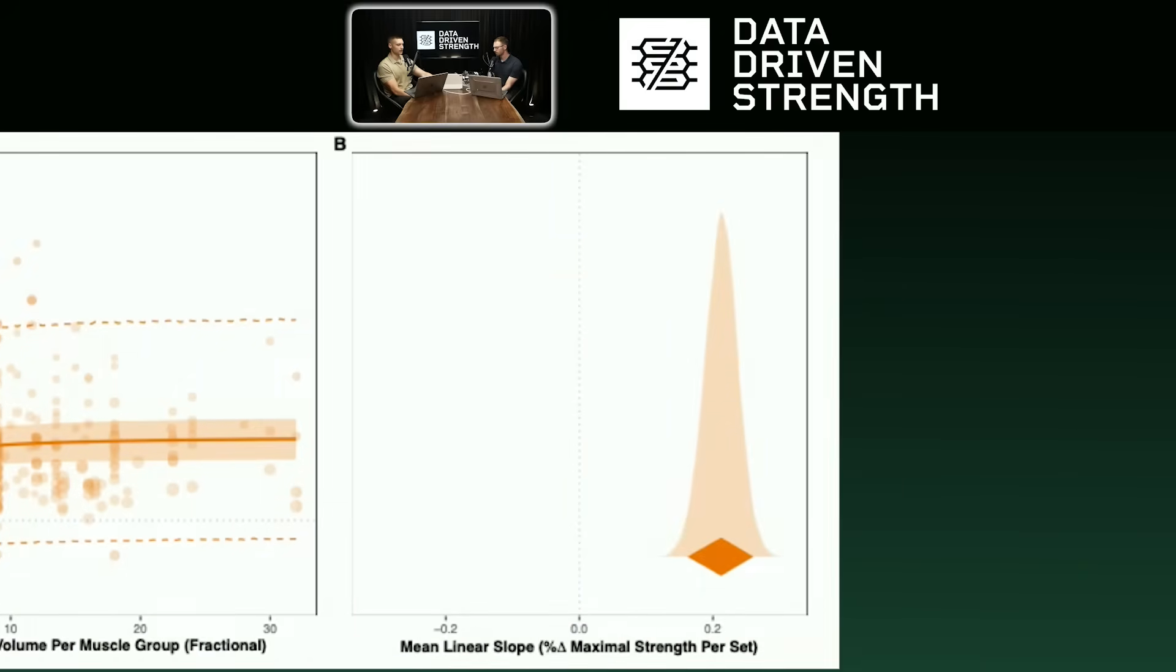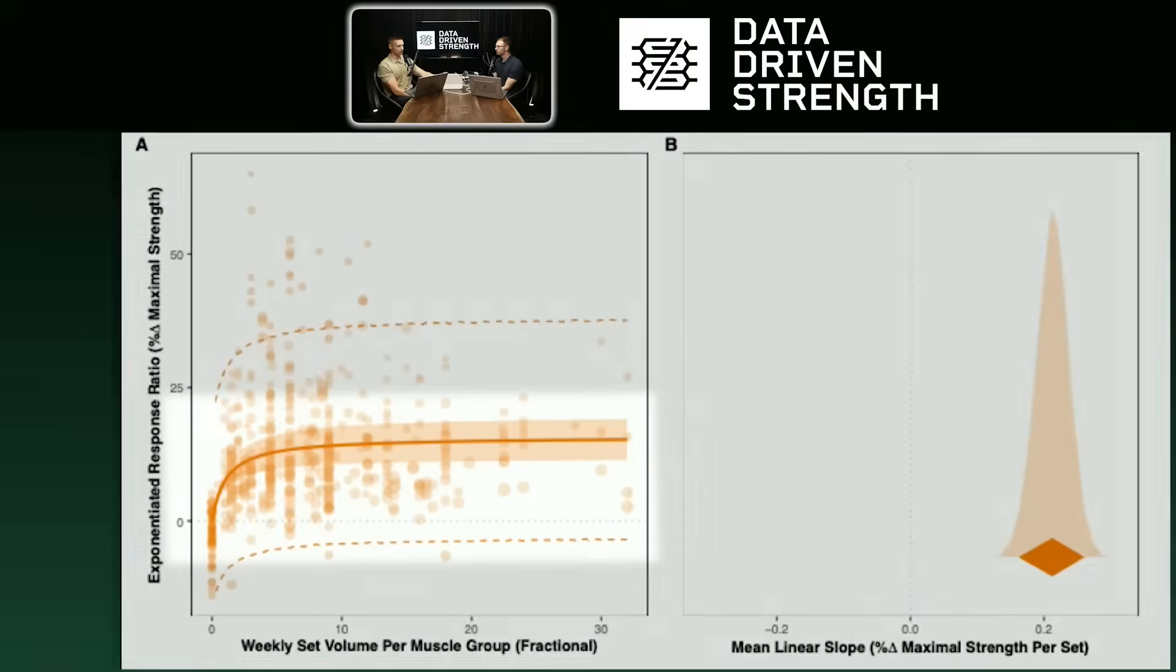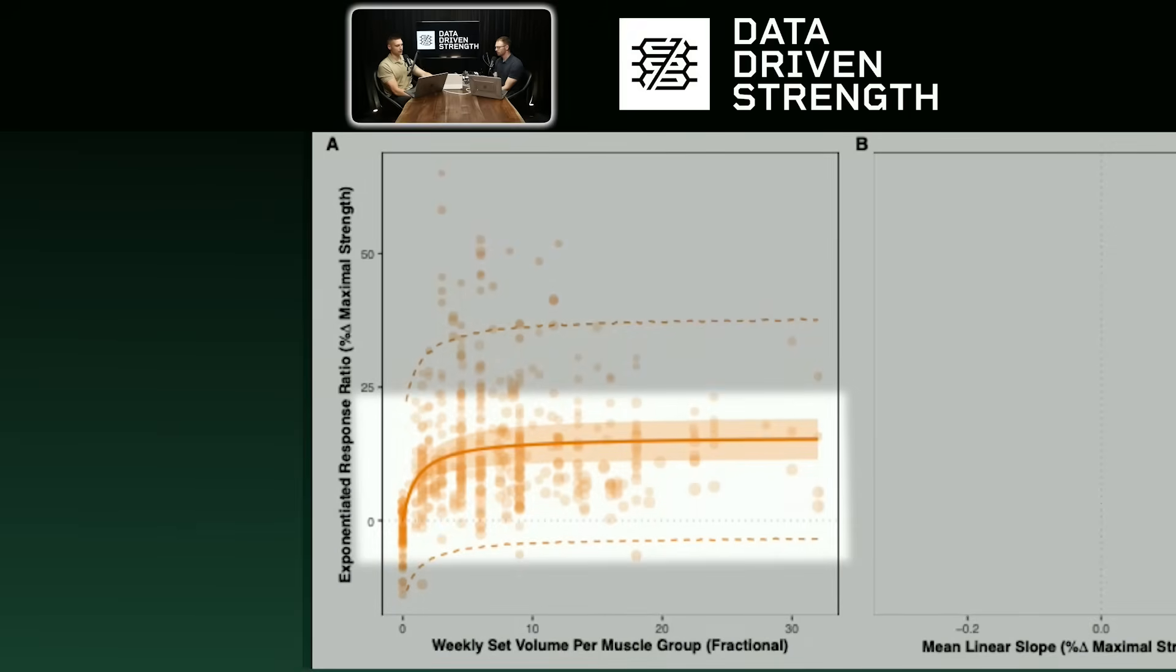And then on the y-axis, you have the exponentiated response ratio, which is just the effect size that we used, which gives us a proxy for the percentage change in maximal strength. And then the thickest line that you see going through the data points there is the best fit line. And then that shaded orange area is the 95% credible interval. And then the dotted line is the 95% prediction interval. And those are just various metrics of where we would expect not only the trend line to be with additional data, but also future data points with additional data.